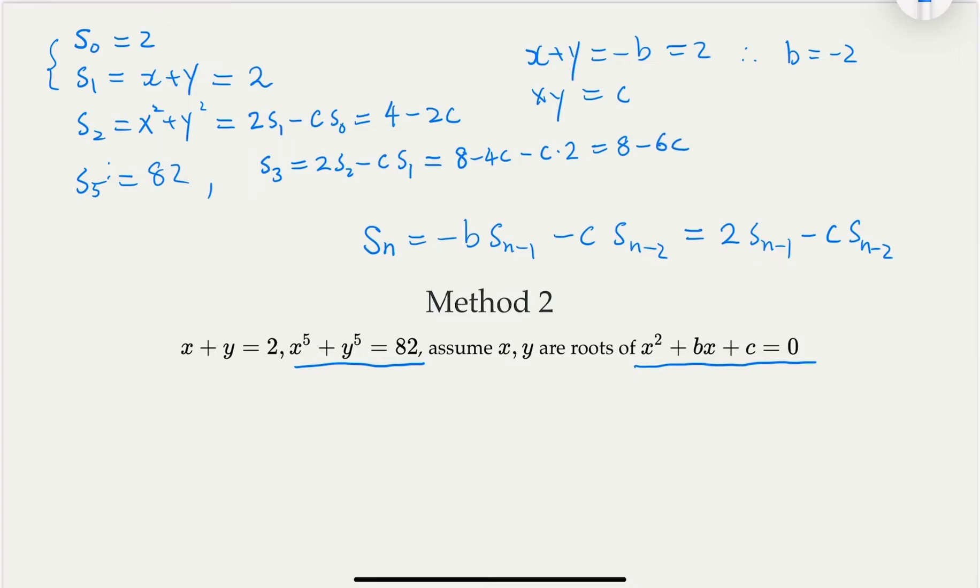So what is s_4? So s_4, let's start from here, equal 2 times s_3 minus c times s_2, and s_5 equal 2 times s_4 minus c times s_3. Let's plug it in here. Now 2 times s_3, s_3 is here, 2 will be 16 minus 12c, minus c times s_2, which is 4 minus 2c. You're gonna have c squared now.